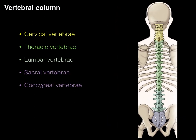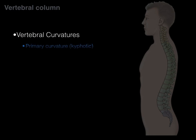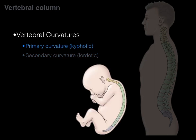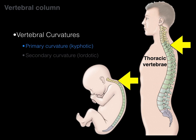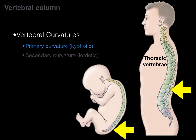The vertebral column runs from cervical, thoracic, lumbar, sacral, to coccygeal vertebrae. Now the curvatures: there are primary curvatures and secondary curvatures. The primary curvature gets its name from the C-shaped curvature formed in the fetus. The thoracic vertebrae retain this C-shaped curve and are called primary or kyphotic curvatures.